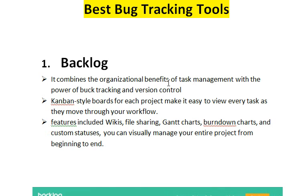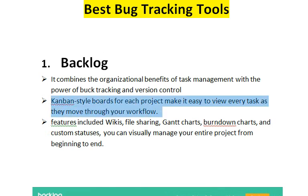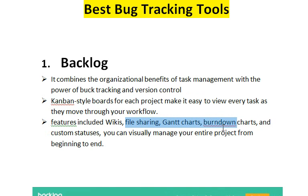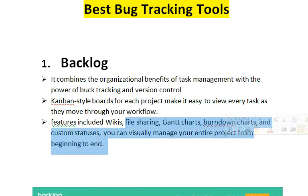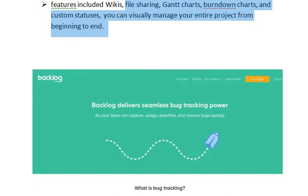The first one is Backlog. Backlog is an all-in-one project and code management tool. It combines the organizational benefits of task management with the power of bug tracking and version control. It contains kanban-style boards for each project, making it easy to view every task as they move through your workflow. It also includes features like wikis, file sharing, burndown charts, and custom statuses.